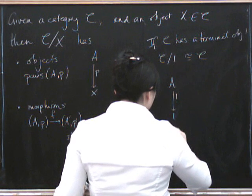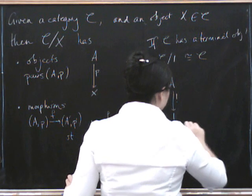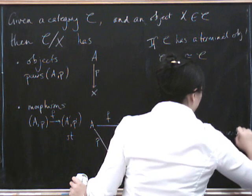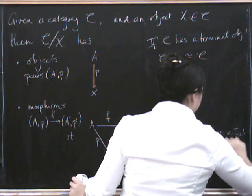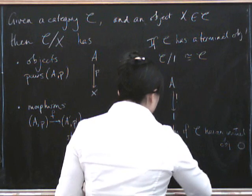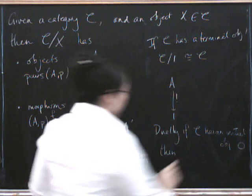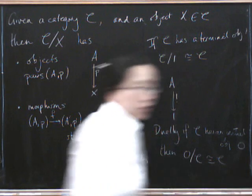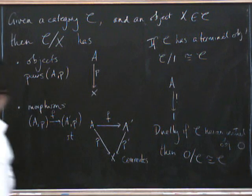So you don't get anywhere by doing that. And dually, if C has an initial object, the initial object zero, then the dual result is true, which is that if you slice under zero, then you don't get anywhere.